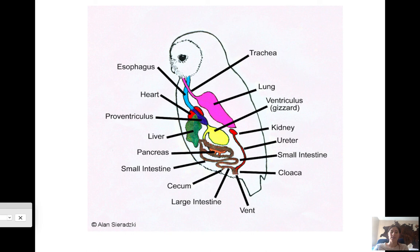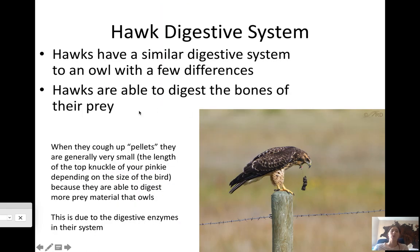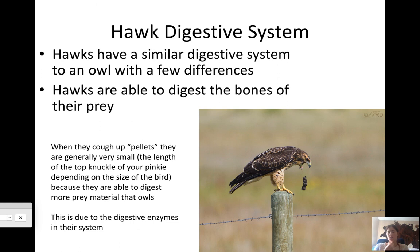Hawks have a slightly more efficient digestive system than owls — they can digest bones better, so their pellets are generally smaller, about the length of your pinky finger or smaller. Their digestive enzymes are a little stronger so they can digest more of their prey. You can see this hawk regurgitating a pellet in the image. That's it for the bird lecture — make sure your diagram paper is filled out, finish your bird poster and feather lab, and your journals will be checked next class.